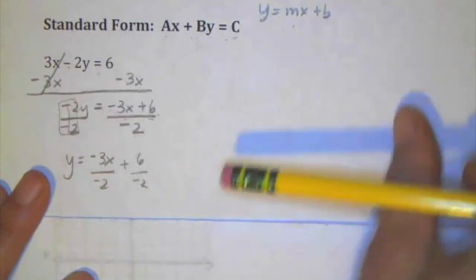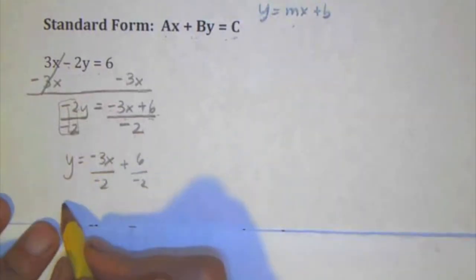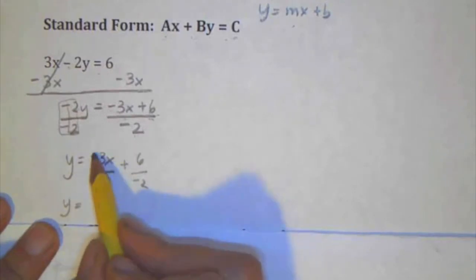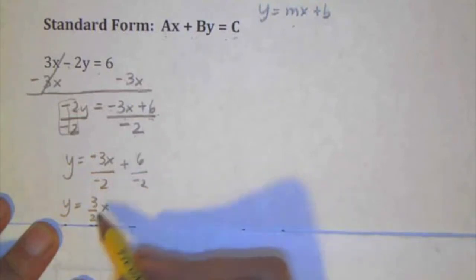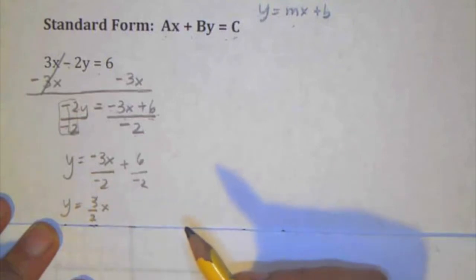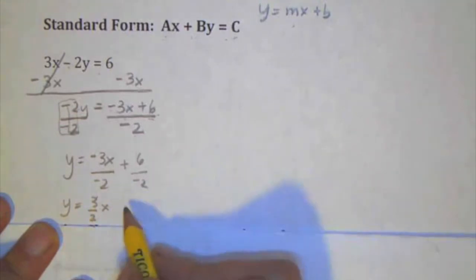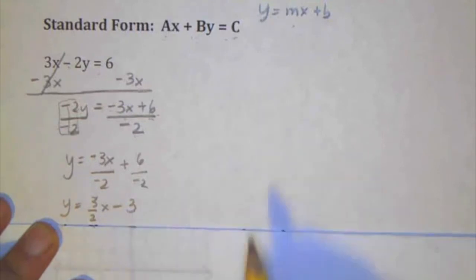And then I'm going to simplify those fractions individually. So y equals, negative over negative is a positive, 3 over 2x. And the nice thing about algebra is keeping things as fractions is fine, even keeping them as improper fractions is fine, because once again, that's the rise over run or the change in y over change in x. So it's going to make it easy if you keep it in that form in order to graph. And then I can see a plus and a minus here, so that is going to be like positive 6 divided by negative 2 is negative 3. So this is in slope-intercept form.